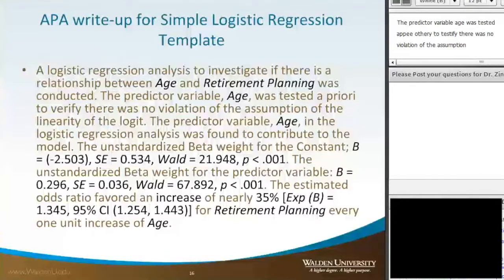The predictor variable age in the logistic regression analysis was found to contribute to the model. The unstandardized beta weight for the constant, B equals negative 2.503, standard error equals 0.534, the Wald statistic equals 21.948, and P was less than .001.